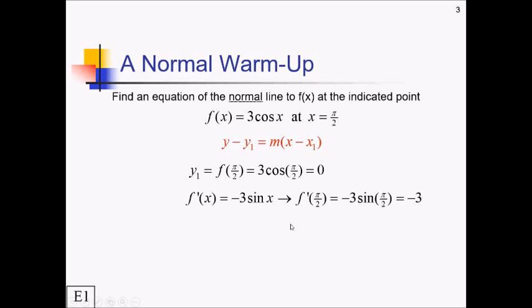We're not quite there yet — we don't have the reciprocal slope. To get that we have to take the opposite reciprocal of this tangent slope. So we're going to negate it and take the reciprocal of negative 3, which gives us positive 1/3.